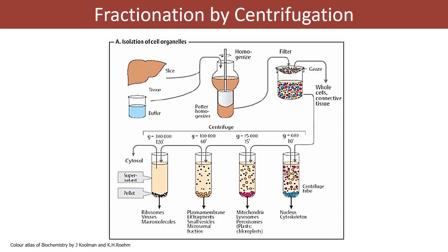This is step two after homogenization. You can see from the figure: here is a tissue slice that has been homogenized and placed in a beaker. Initially, you can filter it to remove large debris. After that, we repeat centrifugation at progressively higher speeds in order to fractionate the homogenate — we keep increasing the speed of the centrifuge so that large particles and large components of the cell are separated first.